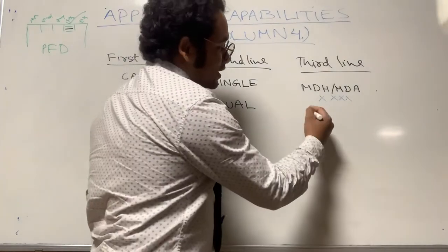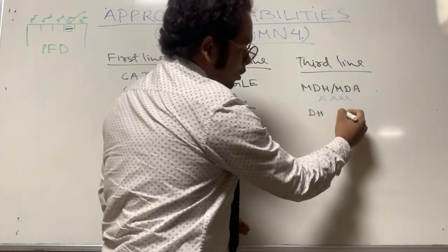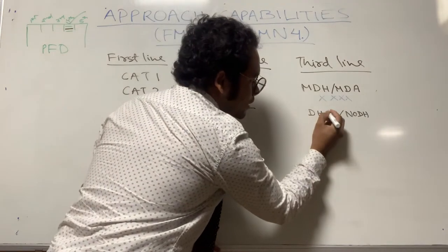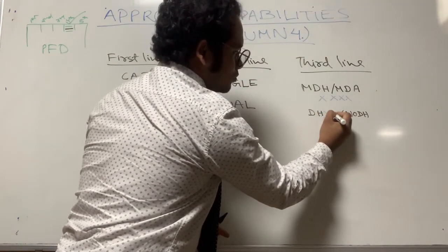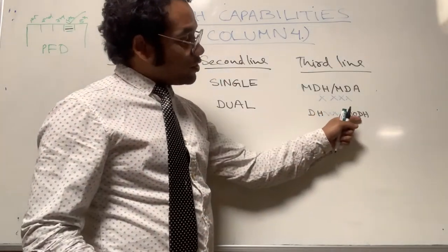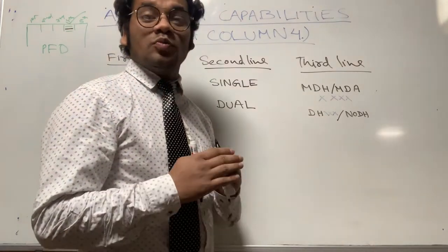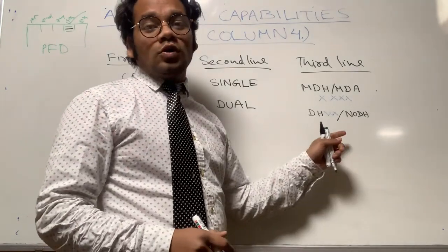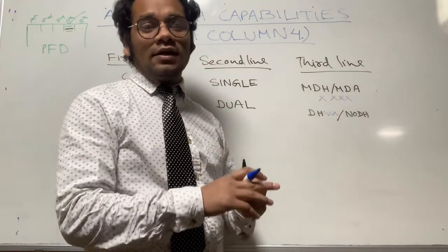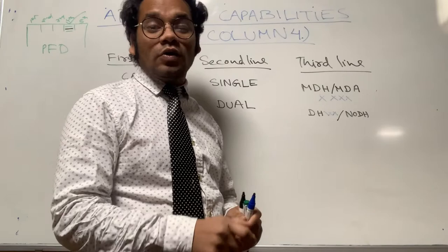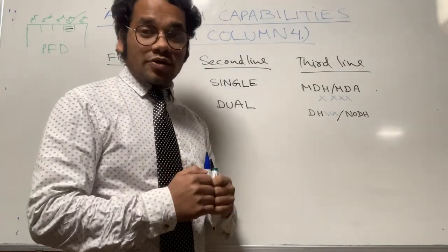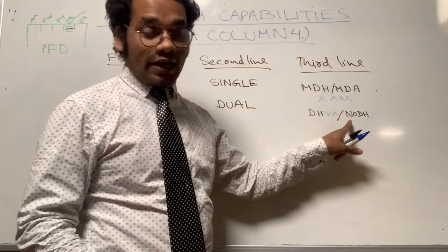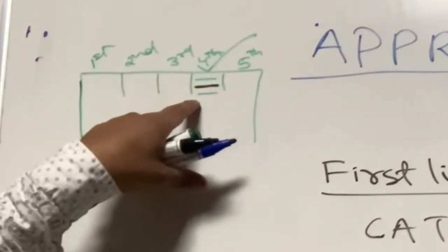In the case of precision approaches, in the third line of the fourth column on the PFD, we can get DH or NO DH. Normally DH and NO DH appear in white color and the digits appear in blue color. The flight crew must enter the decision height value on the MCDU performance approach page. If the flight crew enters the word NO in the relevant field of decision height, then you will get NO DH in the third line of this fourth column.